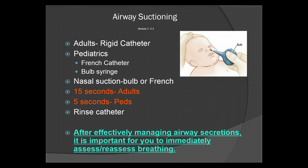For adults, you'll use a rigid catheter — the Yankauer is the best method. For pediatrics, the best is the French catheter. Bulb syringes are generally saved for infants and neonates because it is a low pressure suction and it's not as aggressive, and it's easier for an infant or neonate to tolerate. For nasal suction, you'll definitely want to use a bulb or a French, as the bulb is a lot less aggressive and is usually tolerated better by your infant and neonate patients.